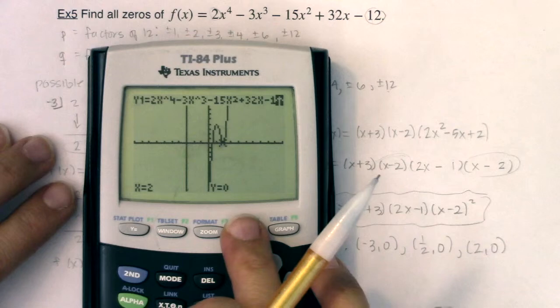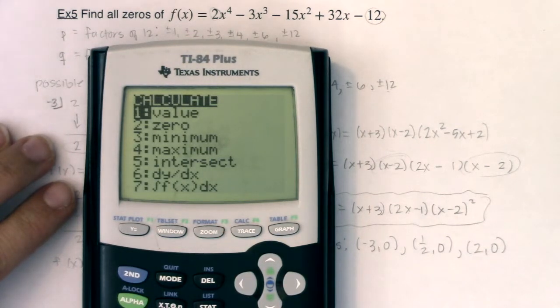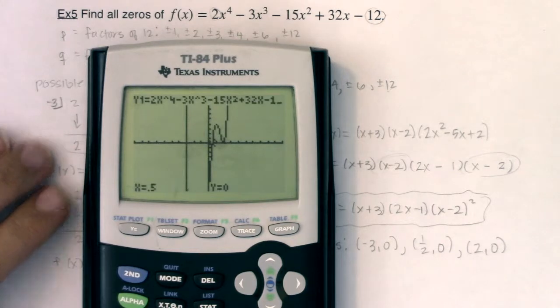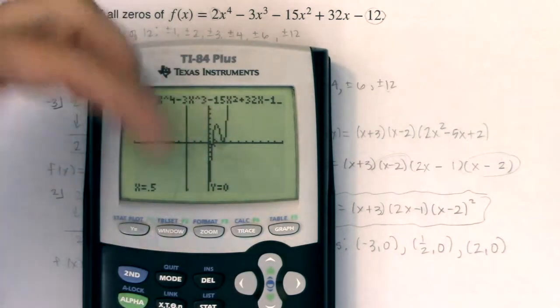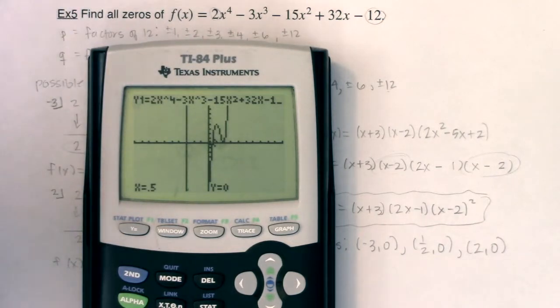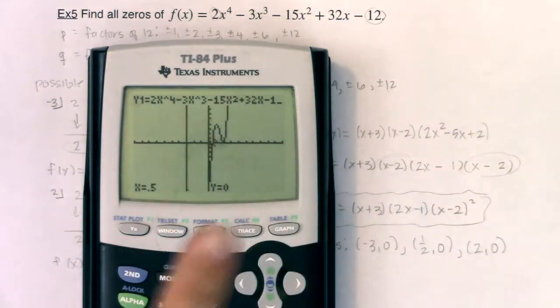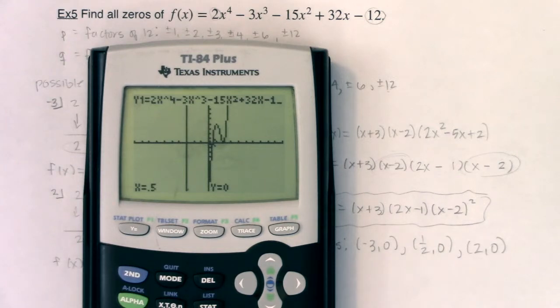And just to verify 1 half, I could hit second trace, option 1, plug in 1 half, and sure enough, there's my function with a y value of zero. So you can see how much fun and how much work this is just to find these zeros. It takes a lot of algebra, a lot of synthetic division, and this is when all of our zeros, our x-intercepts were nice, real, and rational numbers. So we're going to head over to example 6, and we're going to see what happens when you have complex zeros. They're not actually going to show up on your graph anywhere, but they are hanging out as zeros. So with that, we're going to head on over to example 6, and I will see you in a bit.